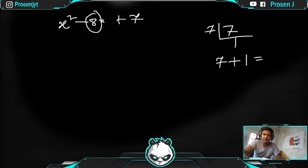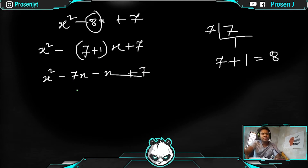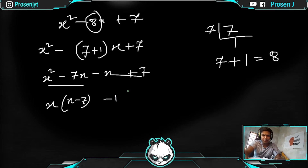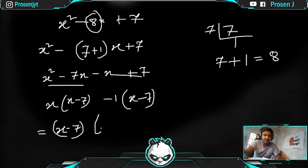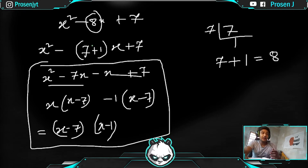So we break -8x as -7x - x, giving x² - 7x - x + 7. From the first two terms, take out x, leaving (x - 7); from the last two, take out -1, also leaving (x - 7). The final factorized form is (x - 7)(x - 1). The main work here is always breaking the middle term correctly — the rest is just grouping.